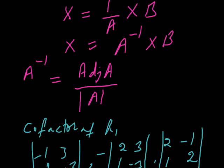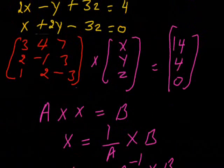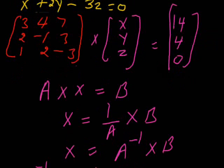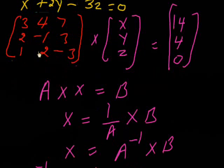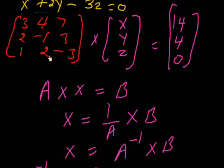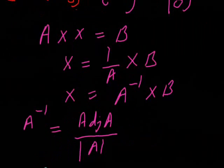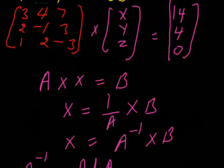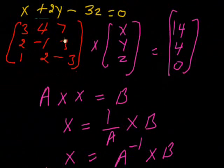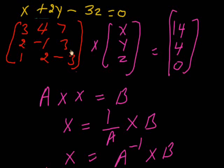So we will calculate the inverse of the matrix. The inverse of a matrix is the adjoint of A divided by the determinant of A. The adjoint of the matrix consists of the cofactors of this matrix and then its transpose. We are calculating the first row's cofactors, second row's cofactors, and third row's cofactors.